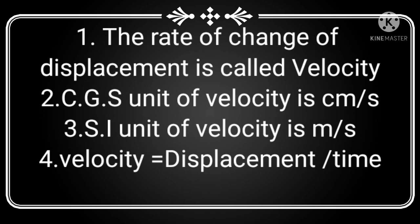The definition of velocity: the rate of change of displacement is called velocity. The CGS unit of velocity is centimeter per second and the SI unit is meter per second. Velocity = displacement ÷ time taken, that is v = s/t. It is a vector quantity.